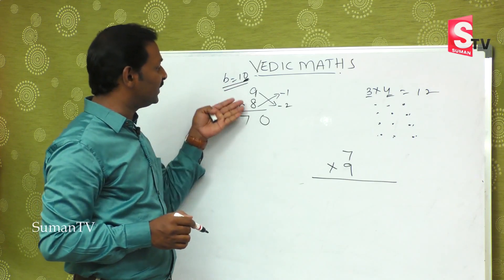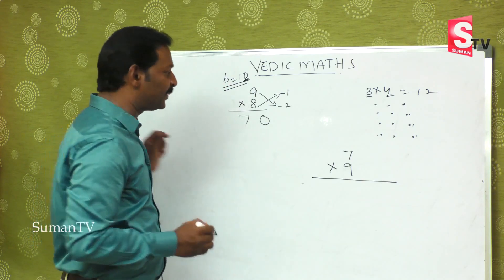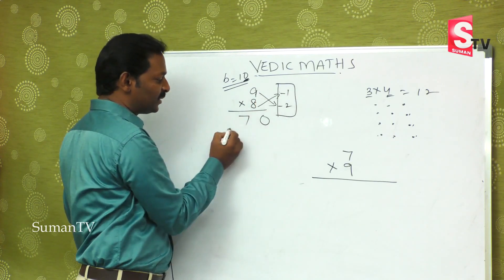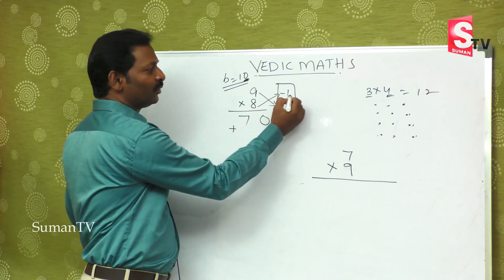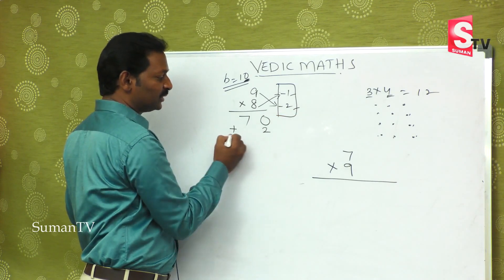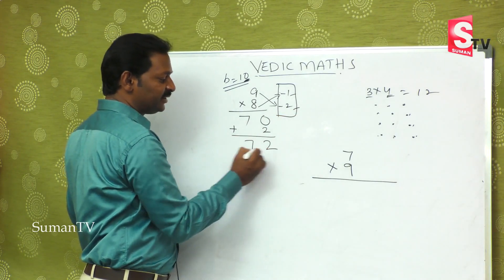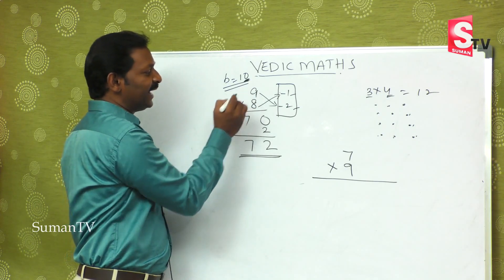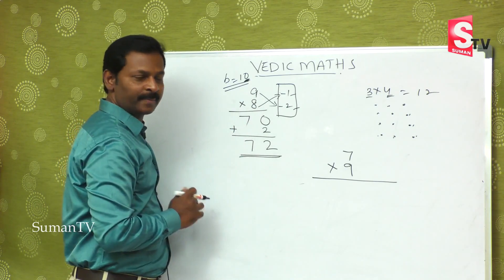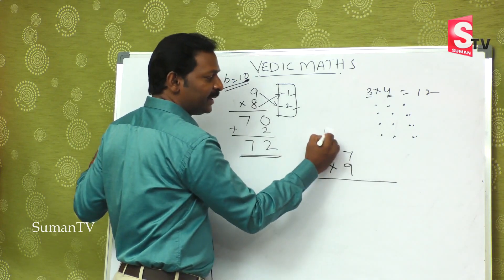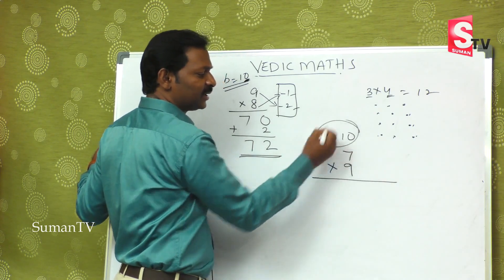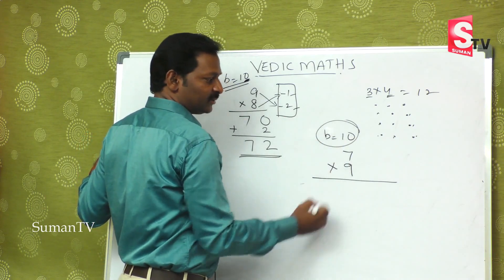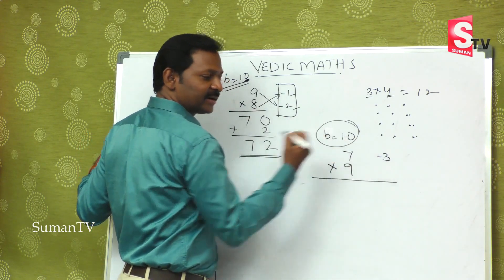But 9 × 8 = 72. Minus into minus is plus. 1 × 2 is 2. The answer is seventy two. So finally, 9 × 8 = 72. This is how we do it with base 10.